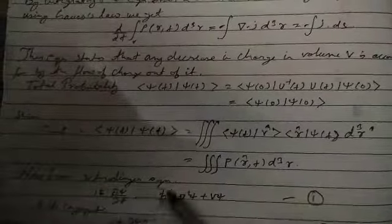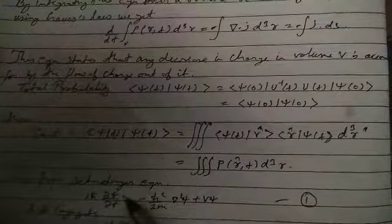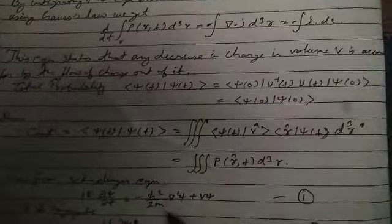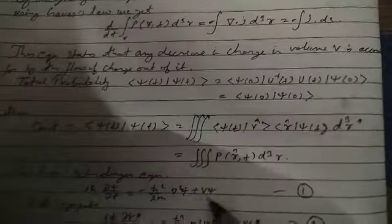Thus for Schrödinger equation iℏ dψ/dt is equal to minus ℏ²/2m del square ψ plus V ψ, and for its conjugate it can be written by replacing ψ by ψ*.